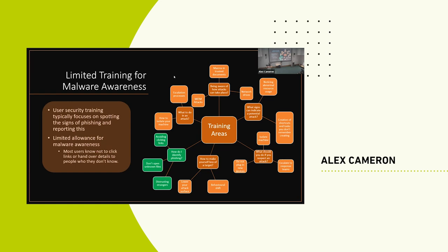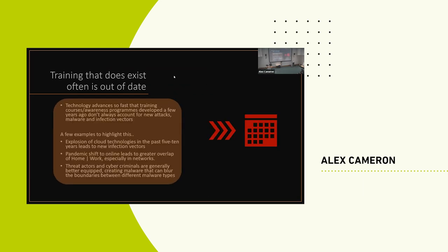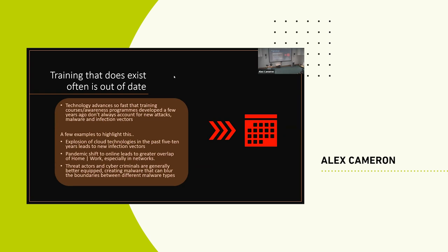The training that does exist is often out of date — it might be telling you about things from 10 or 15 years ago. We're at such a point of technological advancement with AWS, cloud computing, GCP, AI, ChatGPT — all coming out of the woodwork — meaning what you're being trained against yesterday probably won't be as useful today. The threat actors behind this are benefiting from these technological advancements too; the more advanced we get, the more advanced they get.